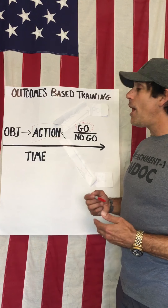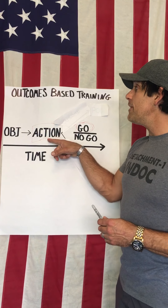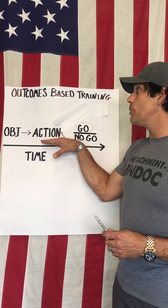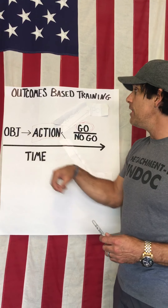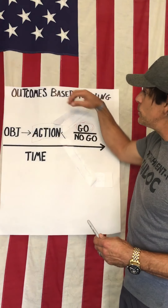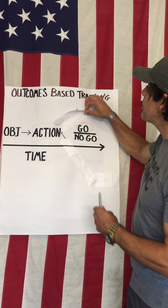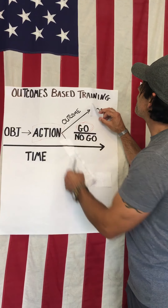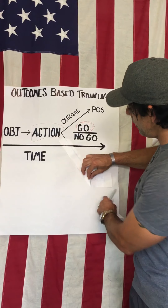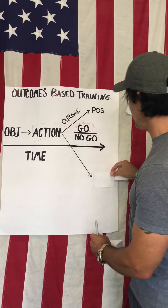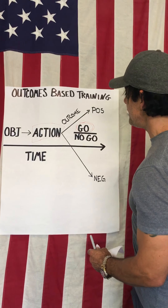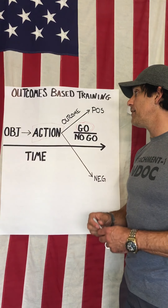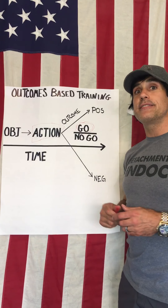But when we're talking about outcomes-based training, we're really focusing on the actions — how you achieve that objective — and there's an outcome based on how you do that. That outcome can either be positive or negative based on how you achieve those actions to get to the objective. I'll give you an example of what that looks like.